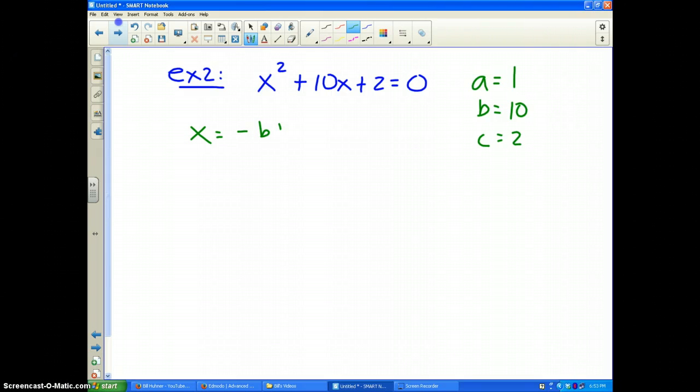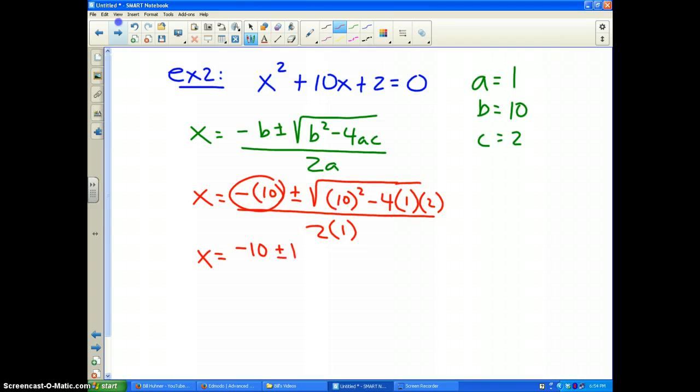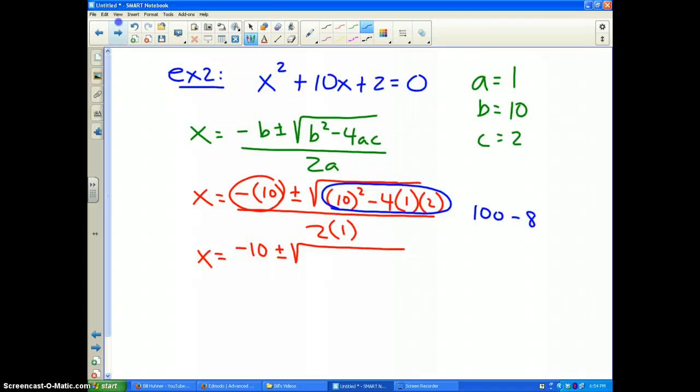So I write out my quadratic formula, and I plug my numbers in, and I put them in parentheses. So x equals negative b, which is 10, plus or minus the square root of 10² minus 4 times a times c, the whole thing divided by 2 times a. Well, this becomes negative 10 plus or minus the square root. Now, underneath the square root in the blue circle, 10² is 100, and then negative 4 times 1 times 2 is minus 8, which makes 92. So I get the square root of 92 divided by 2 times 1, which is 2.